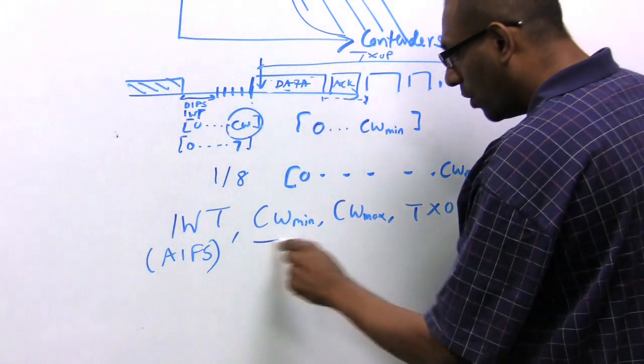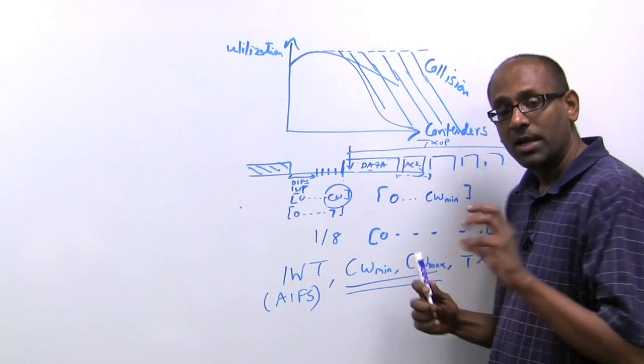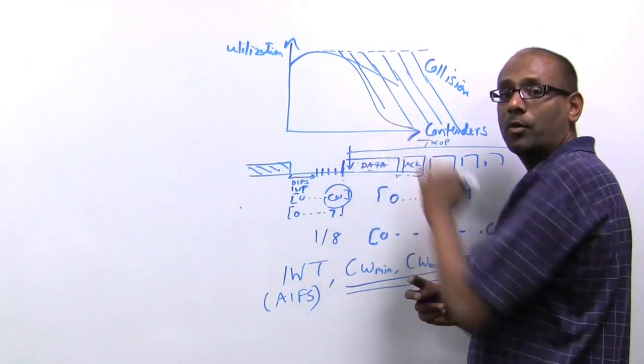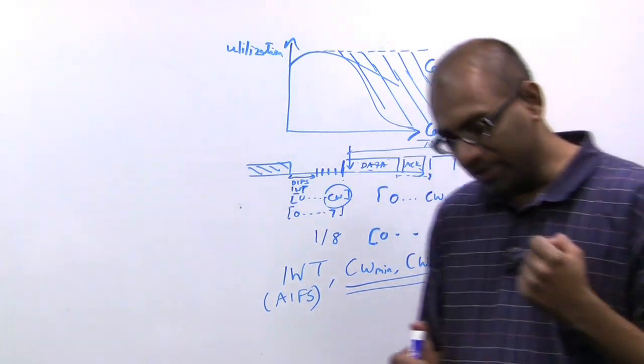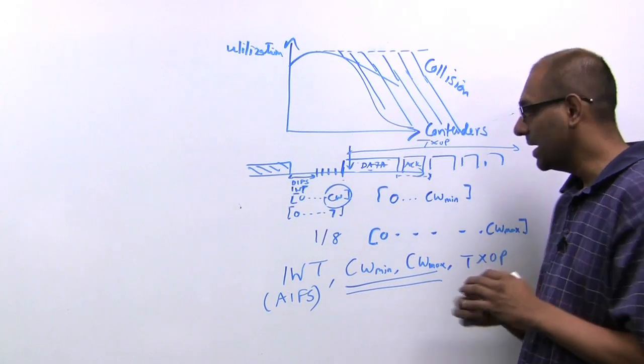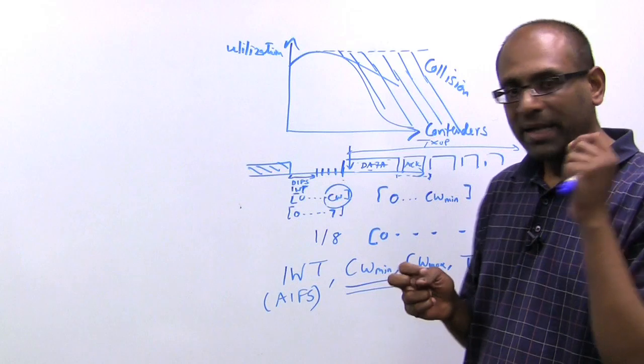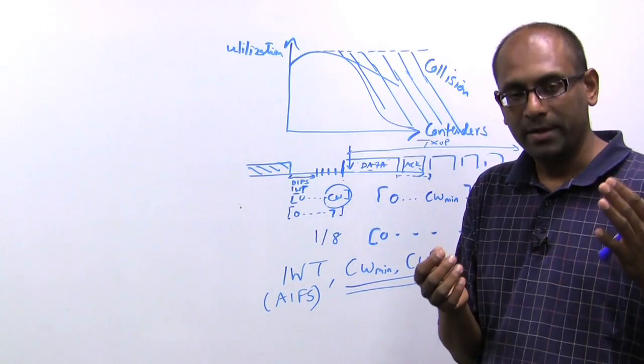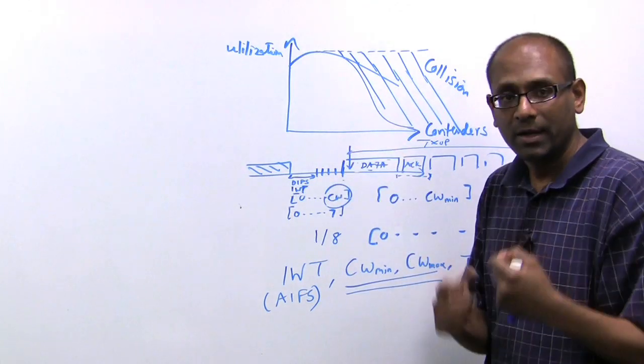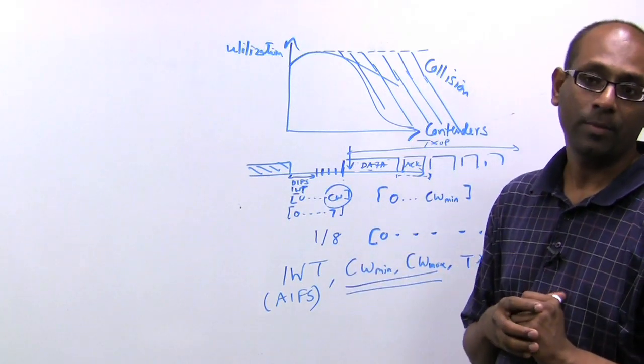The point here is, if you know how to adapt the contention window to the amount of over the air traffic, you can really reduce the amount of loss. So Meru, over a period of seven years, with a lot of research and several patent-pending algorithms, has figured out a way to effectively estimate the number of on-the-fly contenders, the number of devices that at any given microsecond are effectively contending for the air, and on that basis, customize the CW min and CW max.